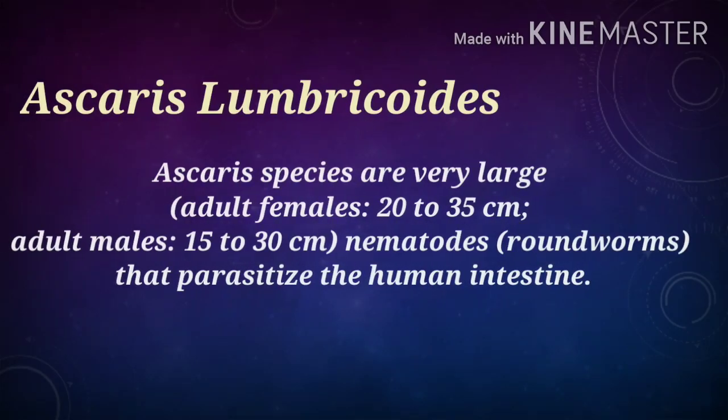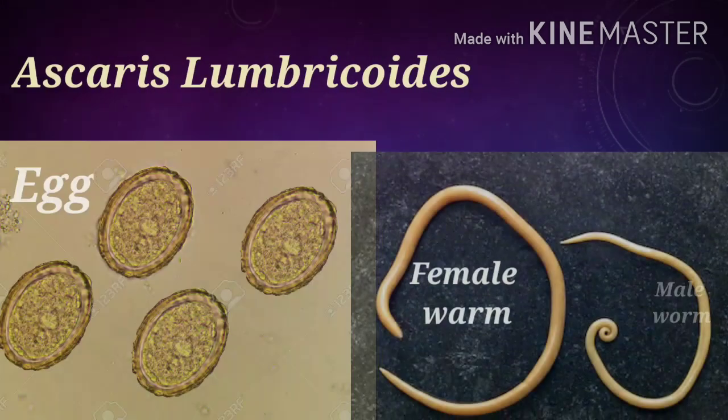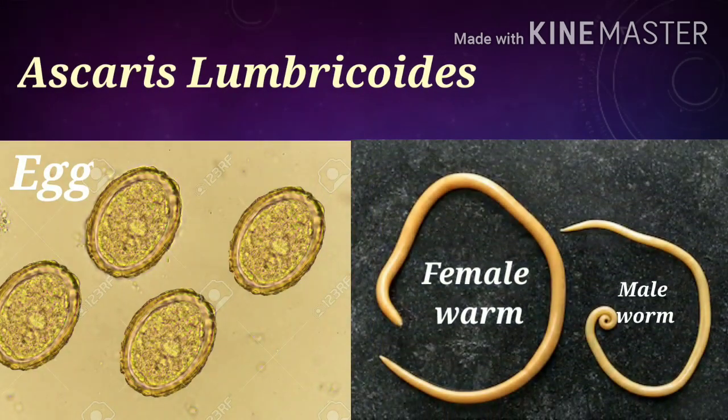The next one is Ascaris lumbricoides. Ascaris species has very large adult worms — the adult female worm is 20 to 35 cm, and the adult male worm is 15 to 30 cm in length. This roundworm parasitizes the human intestine. See in this picture.